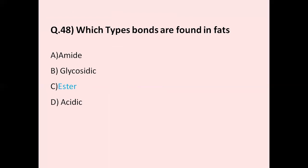Question number 48: Which type of bonds are found in fats? Option A amide, option B glycosidic, option C ester, option D acidic. The correct answer is option C, ester. Fatty acids consist of one glycerol linked to three fatty acids by ester bonds.